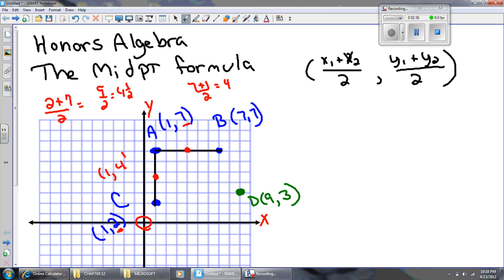9 divided by 2 is 4½. And those are the coordinates right there. I didn't actually write them in here. I should have written 4 and 7.